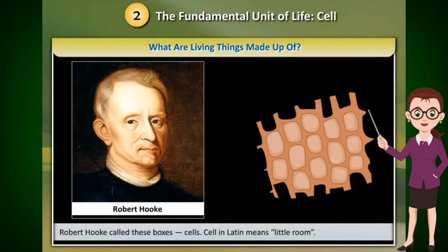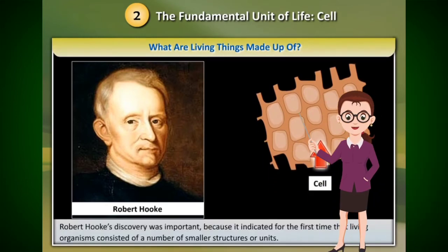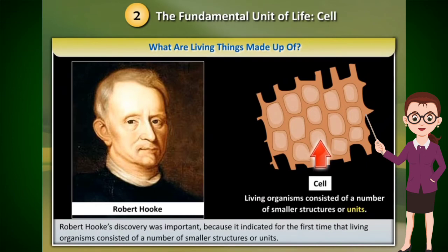Robert Hooke called these boxes 'cells.' Cell in Latin means 'little room.' Robert Hooke's discovery was important because it indicated for the first time that living organisms consisted of a number of smaller structures or units.